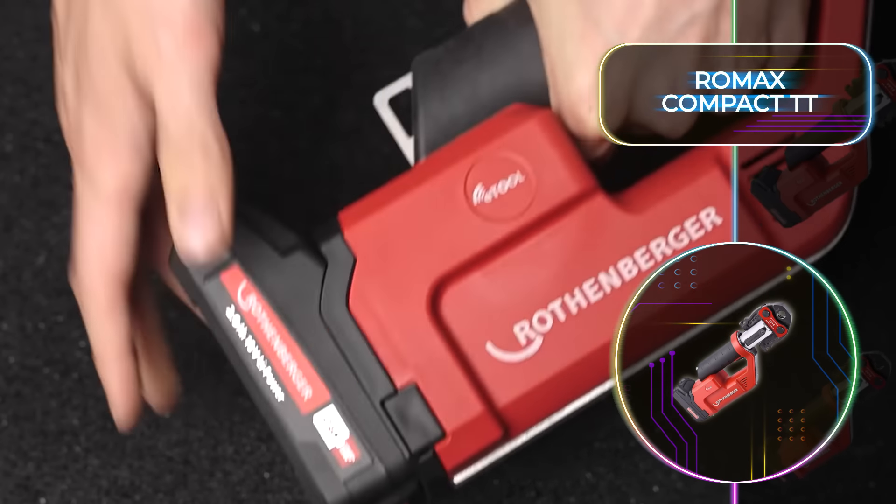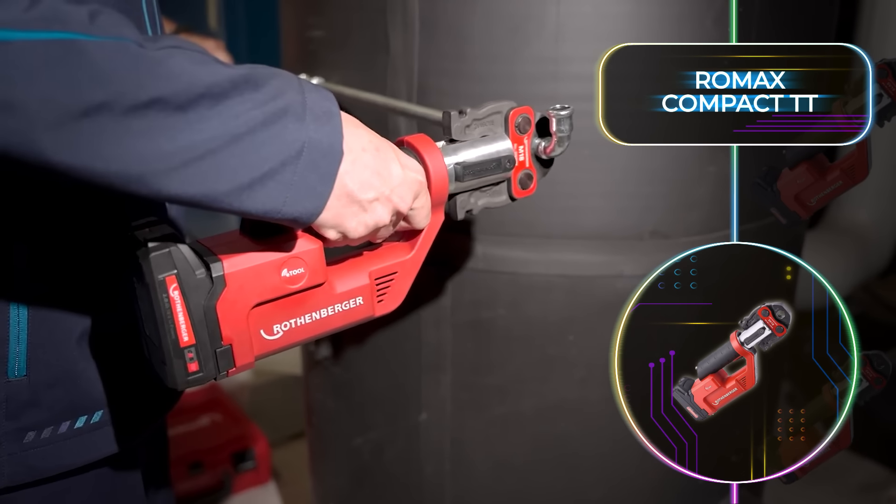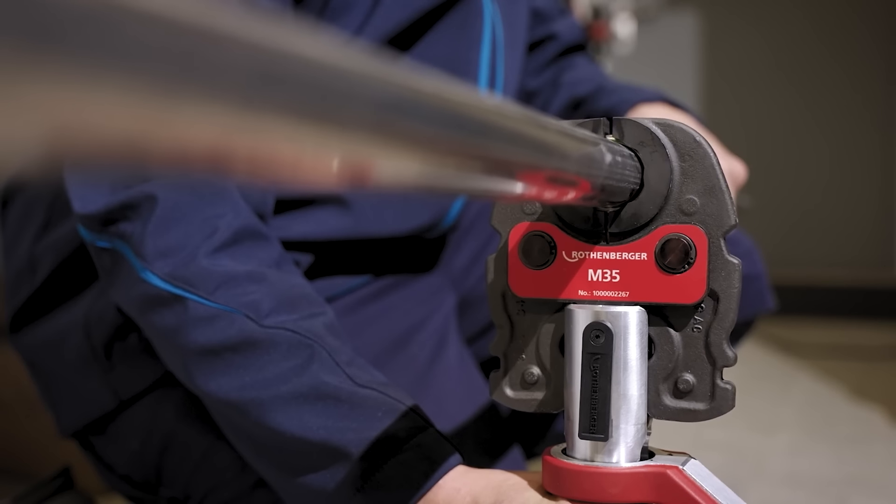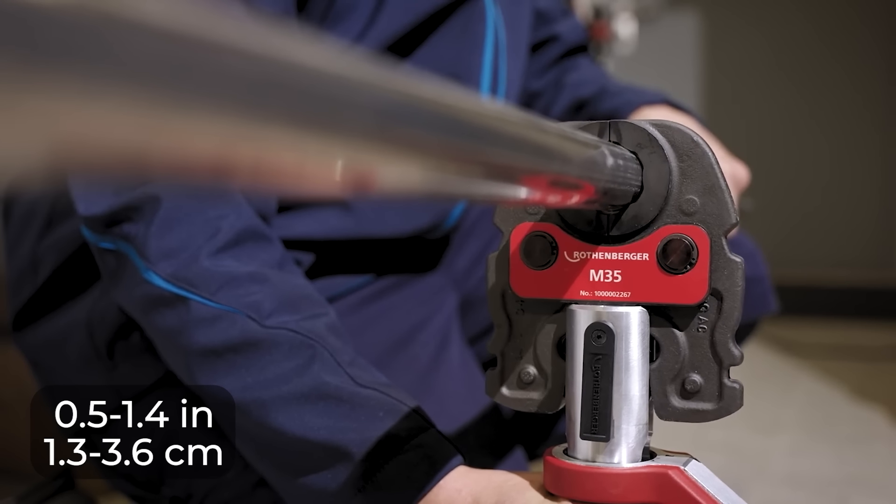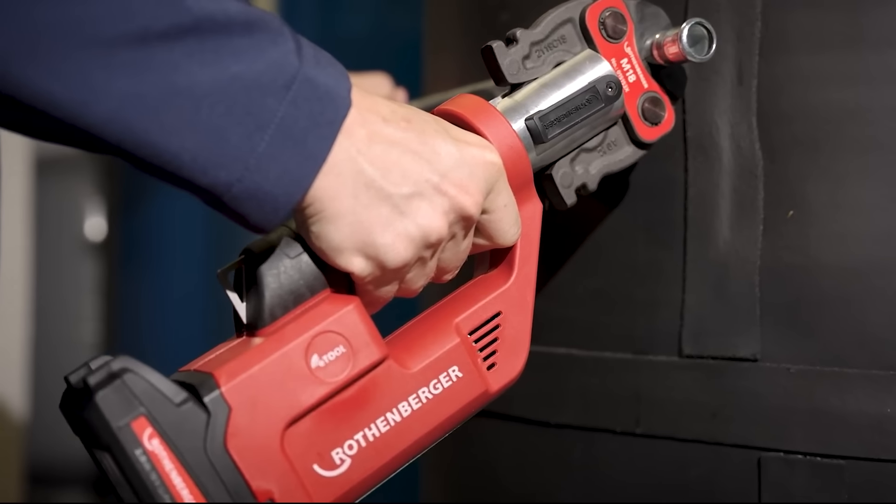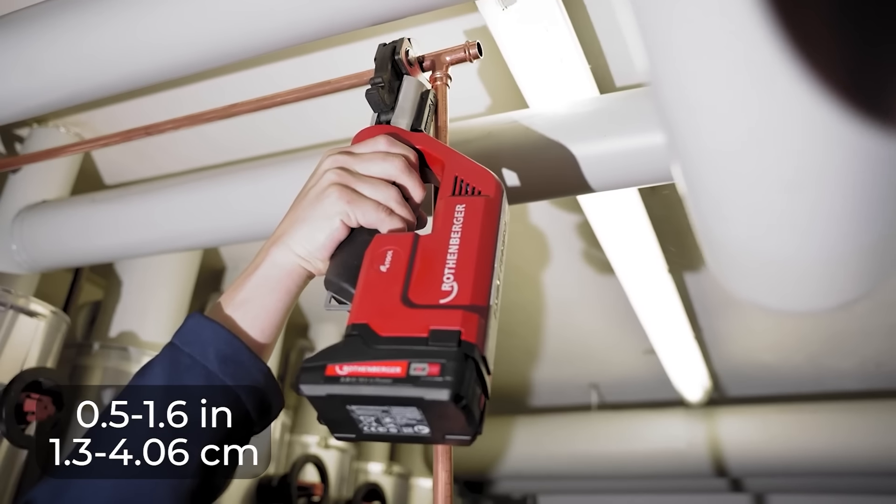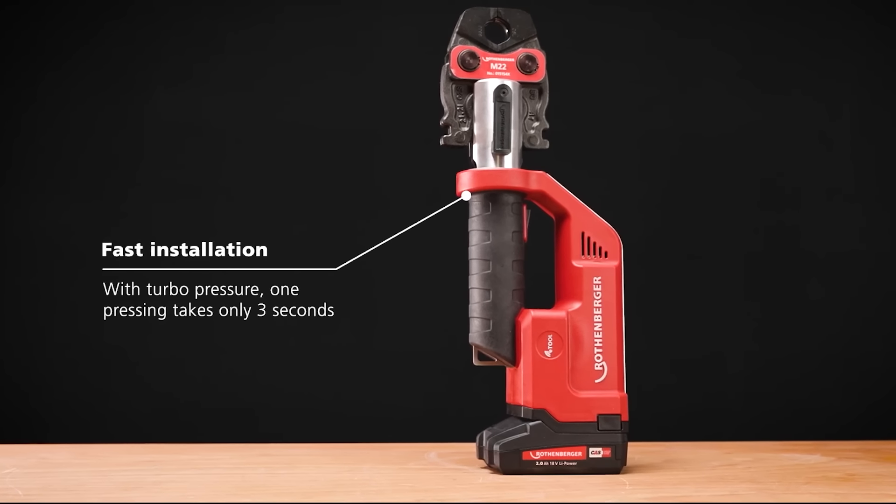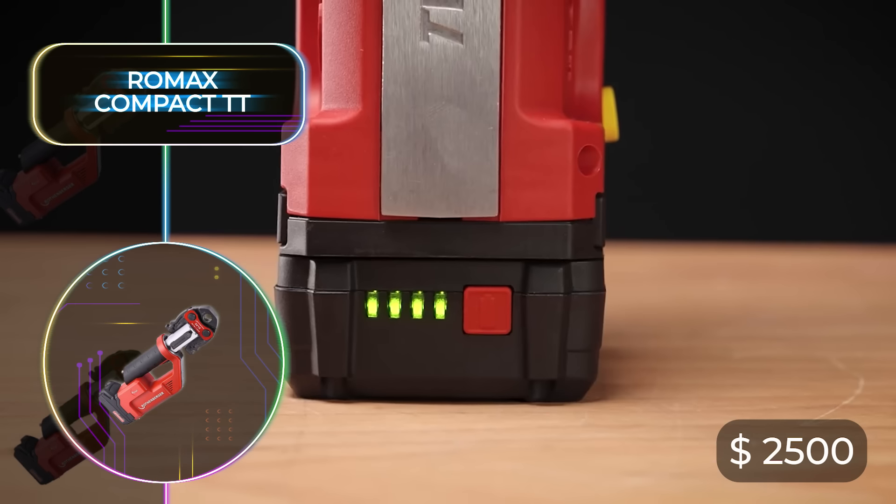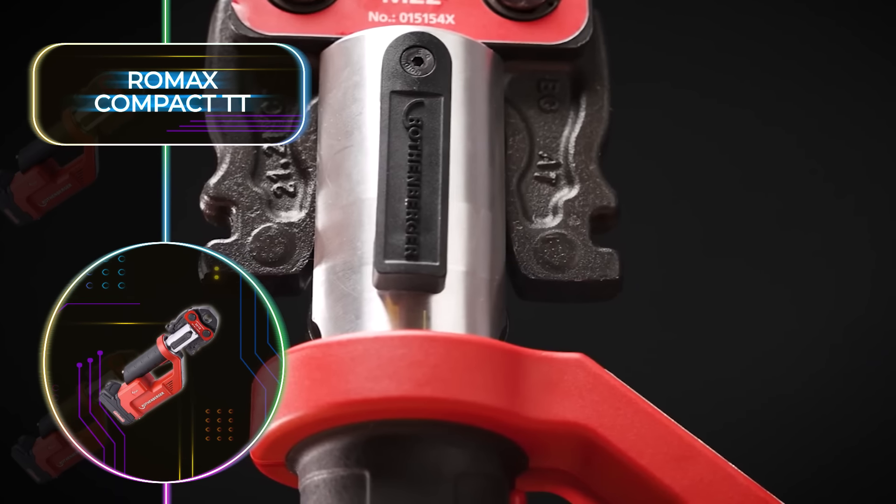With a built-in crimping force of 19 kilonewtons, it ensures secure fittings every time. It can handle metal fittings ranging from 0.5 to 1.4 inches or 1.3 to 3.6 centimeters in diameter, as well as plastic fittings from 0.5 to 1.6 inches or 1.3 to 4.6 centimeters in diameter. All this convenience and power is available at a price of about $2,500, but we all know that you get what you pay for.